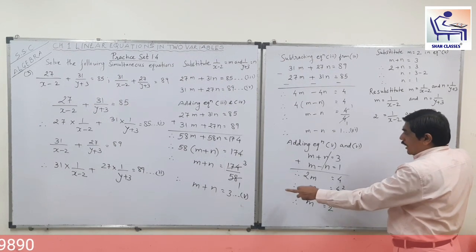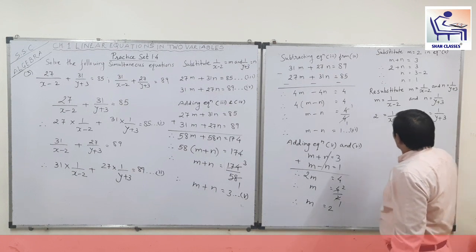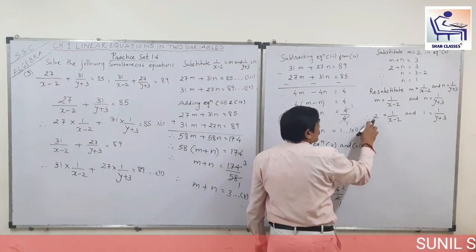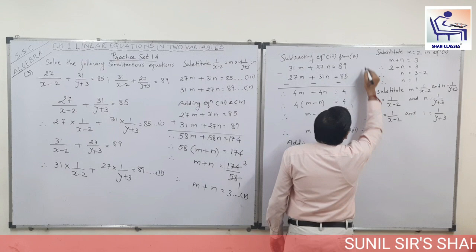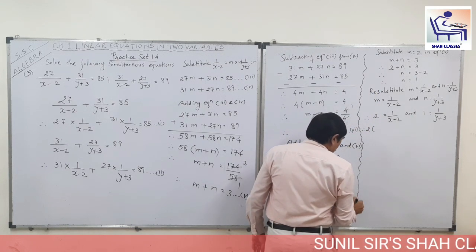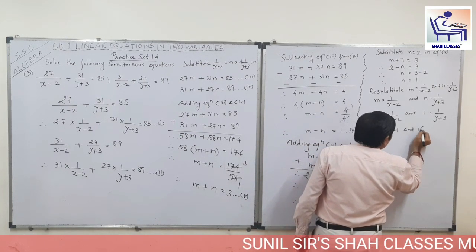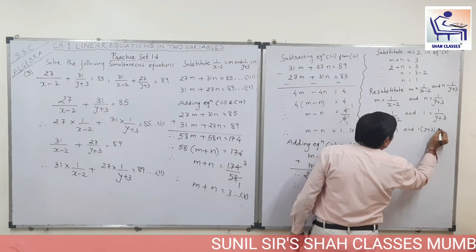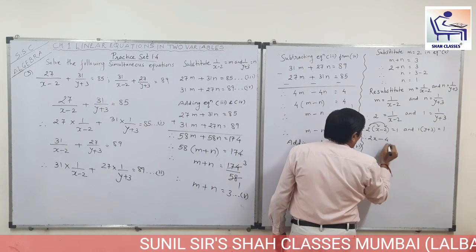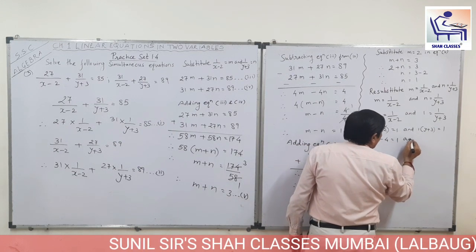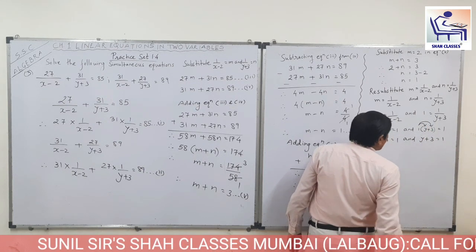And N is 1: so 1 is equal to 1 upon (y plus 3). Now doing cross multiplication: 2 into (x minus 2) is equal to 1. So 2x minus 4 is equal to 1. And 1 into (y plus 3): 1 into y is y, 1 into 3 is 3, so y plus 3 is equal to 1.